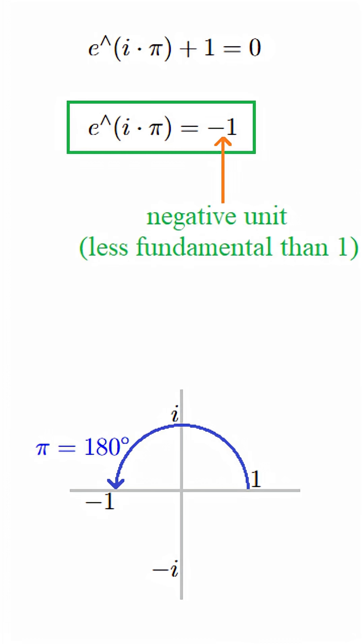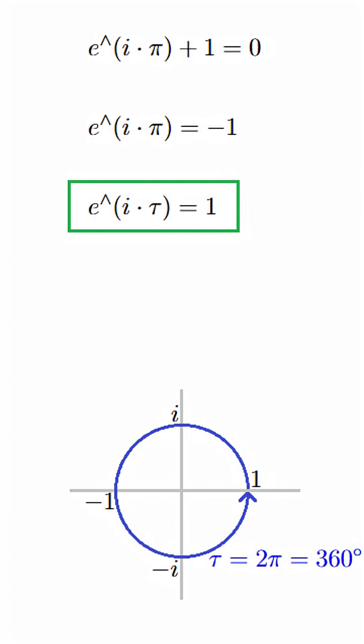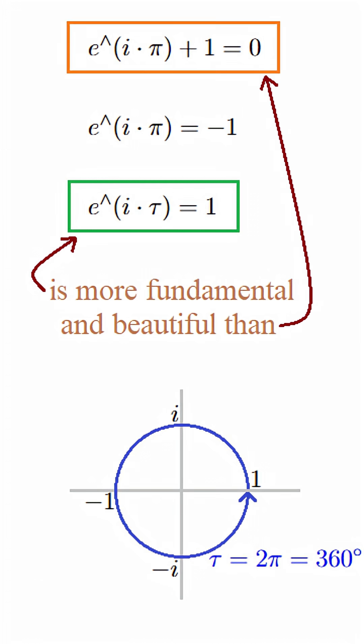But now, what happens when we remember that it's not pi that's the most fundamental number of circle geometry, but rather 2pi? Well, if we change the pi in the left-hand side of this equation to 2pi, we get that e to the power of i times 2pi is equal to 1. And in my opinion, this equation is much more mathematically fundamental and more beautiful than this one.